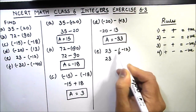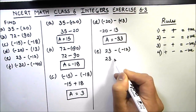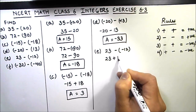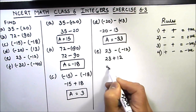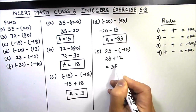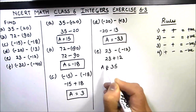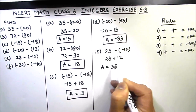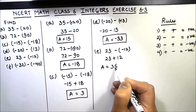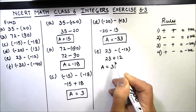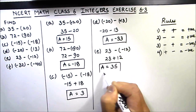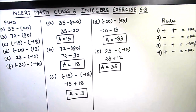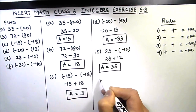Part e is 23 minus (-12). We write 23 as is. Minus and minus — same sign — gives plus 12. Now 23 plus 12 is 35. Both numbers are positive, so the sign is positive. Our final answer is plus 35.